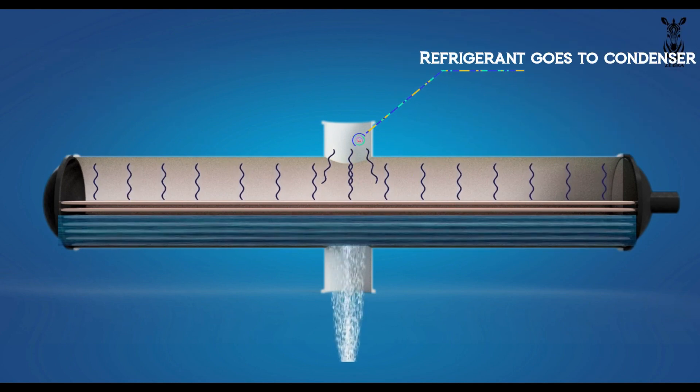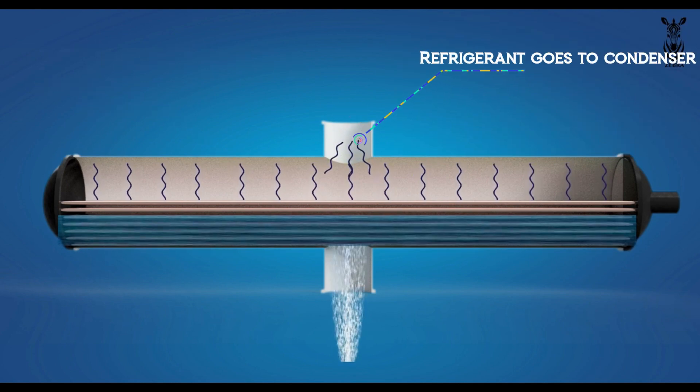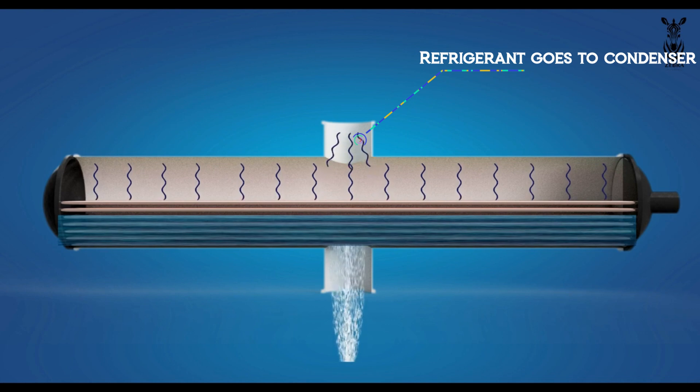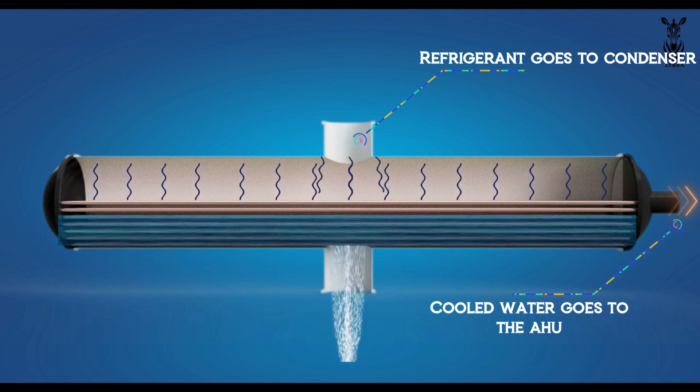Then from there, it goes to the condenser with the help of the compressor. The cooled water from there goes to the AHU.